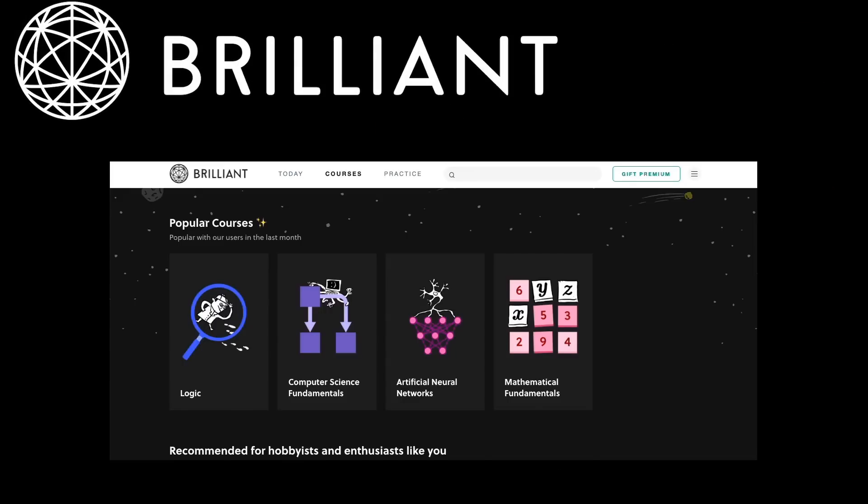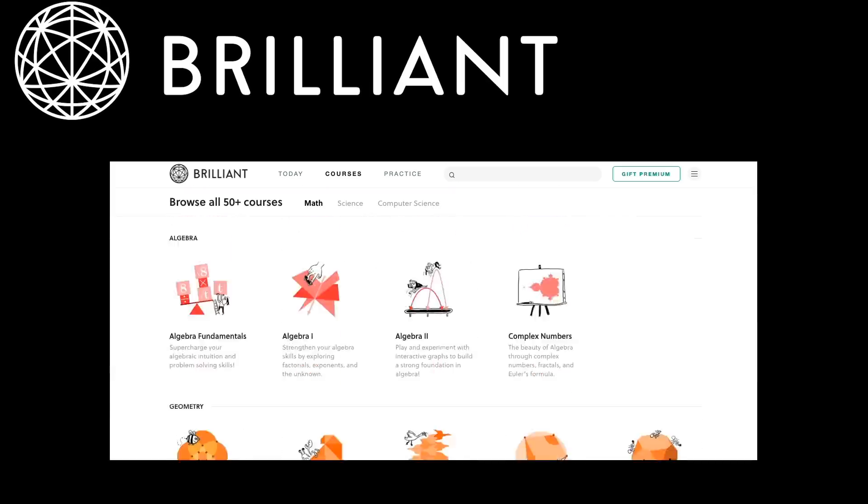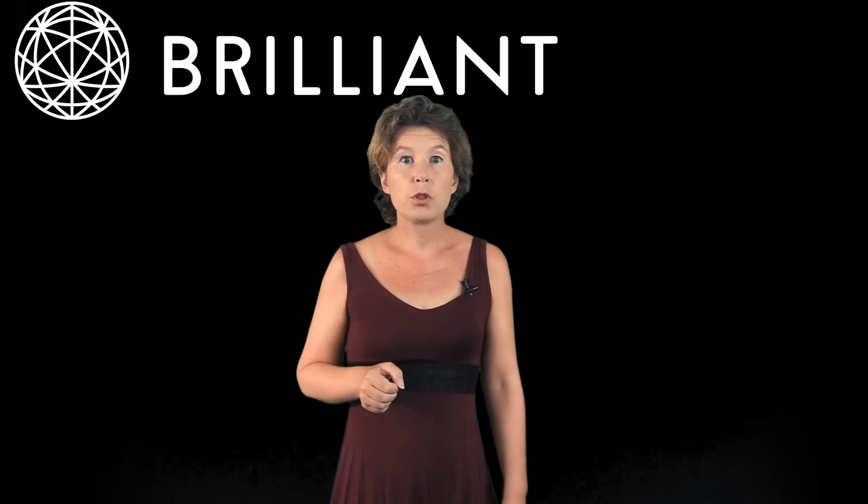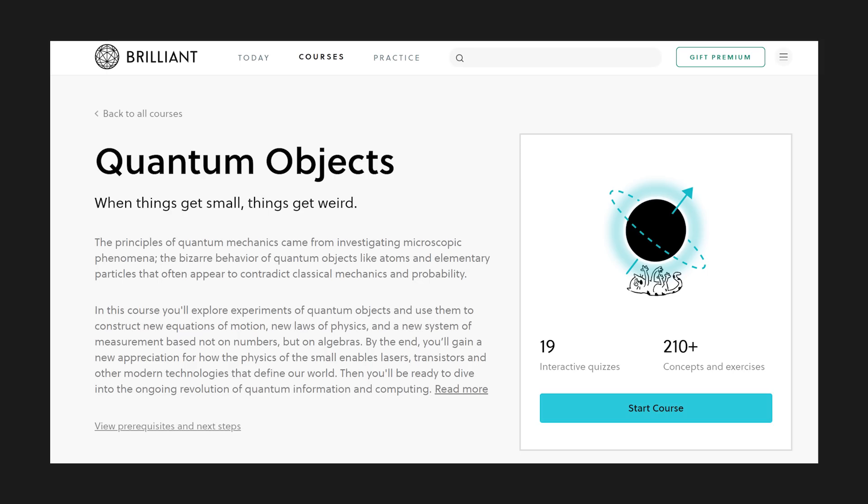The best way to understand a new subject is to actively engage with it. And as much as I love doing these videos, this is something you have to do for yourself. A great place to start engaging with quantum mechanics on your own is Brilliant, who have been sponsoring this video. Brilliant offers interactive courses on a large variety of topics in science and mathematics. To make sense of what I just told you about density matrices for example, have a look at their courses on linear algebra, probabilities, and on quantum objects.